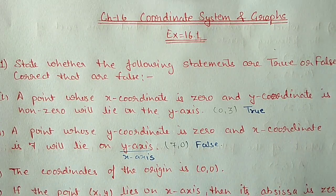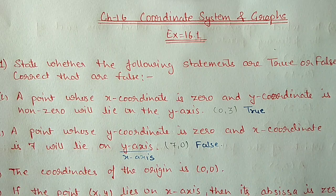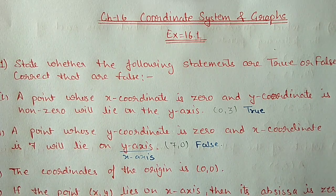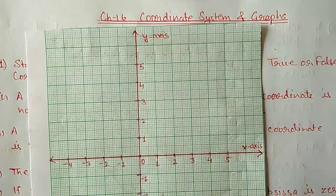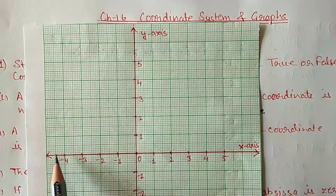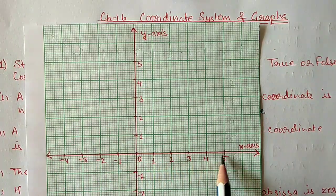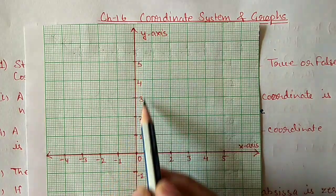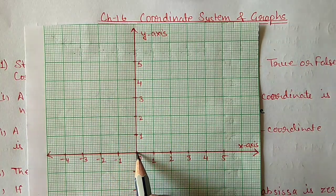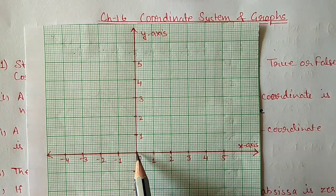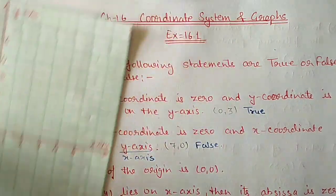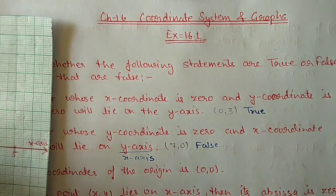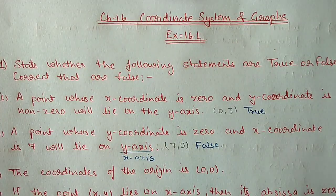Part c: the coordinate of the origin. The origin is where the x-axis and y-axis meet. Its coordinates are (0, 0). So this statement is true.